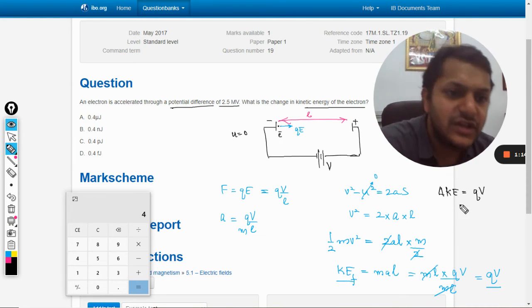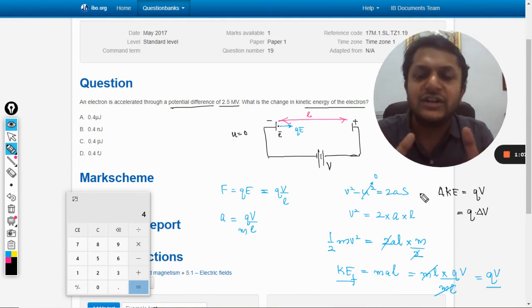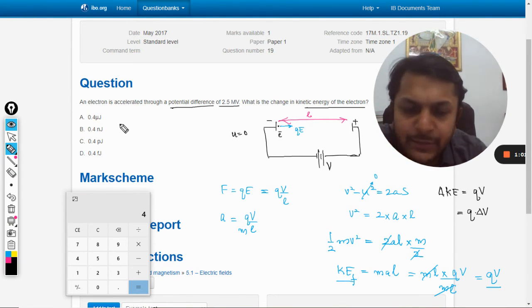Now we can directly apply this and we will find the change in kinetic energy. So what is the charge? Charge on electron is 1.6 into 10 to the power minus 19, and the voltage applied is 2.5 into 10 to power 6. So this is a very simple formula.